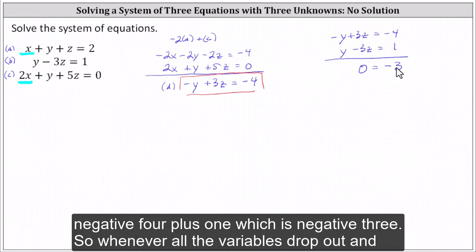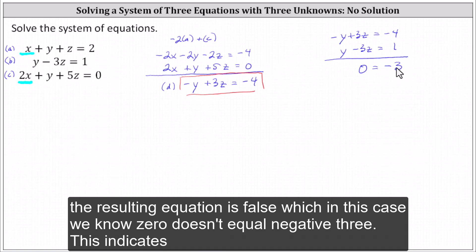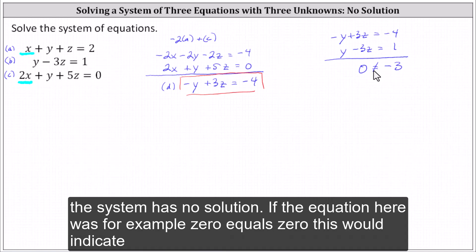So whenever all the variables drop out and the resulting equation is false, which in this case we know zero doesn't equal -3, this indicates the system has no solution.